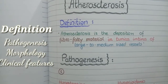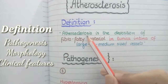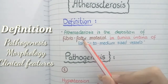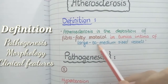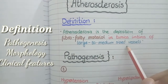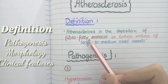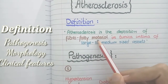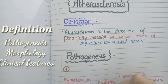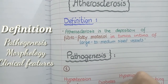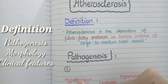Let's come to the definition of atherosclerosis. Atherosclerosis is the deposition of fibro-fatty material in the tunica intima of large to medium sized vessels. The first keyword is fibro-fatty material, which implies that atherosclerotic plaques are composed of fibrous tissue and fatty tissue.